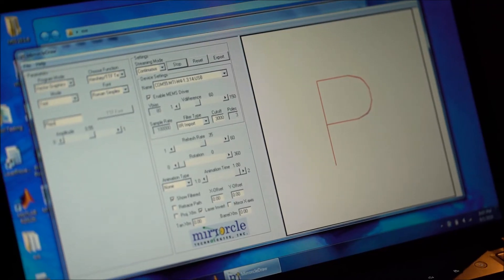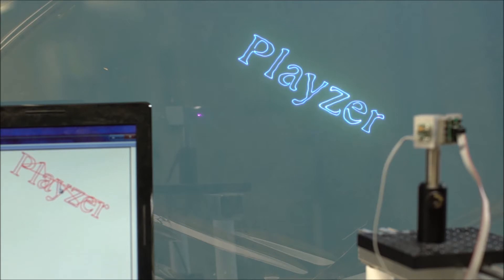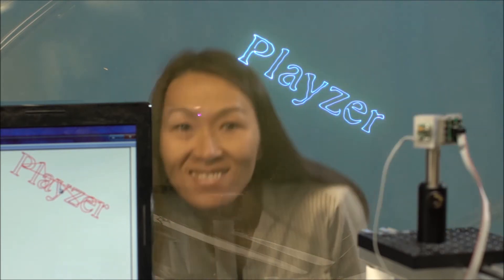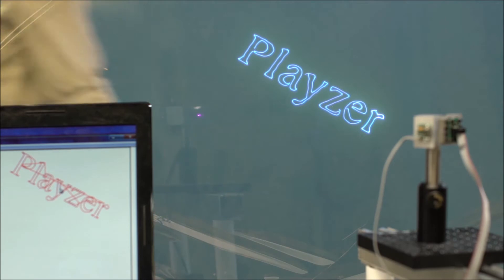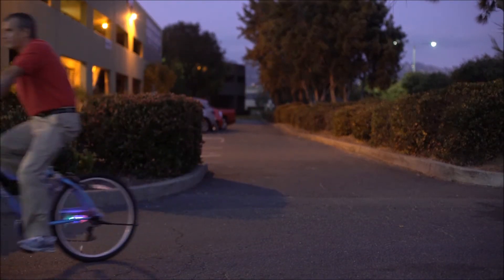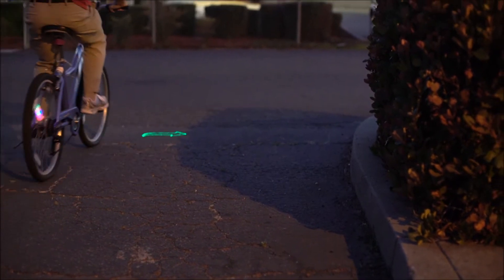We also made a display on glass, which is specially coated for laser displays but still fully transparent. That was developed when we had a head-up display project for cars. We also attached our laser display to a bike to display directions in front of it.